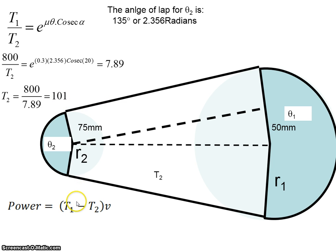The power transmitted by the belt is T1 minus T2 times V, where V is the velocity of the belt. Let's plug in the numbers. T1 is 800 newtons, and T2 is 101 newtons.